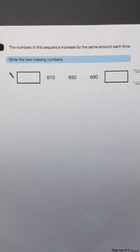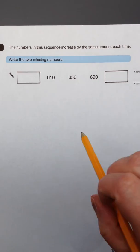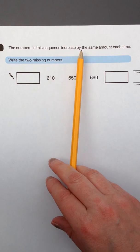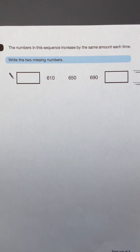Okay, this is question 2 from the 2014 Key Stage 2 SATs. Read the question carefully. It says, the numbers in this sequence increase by the same amount each time.